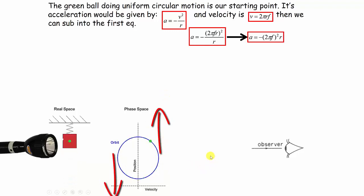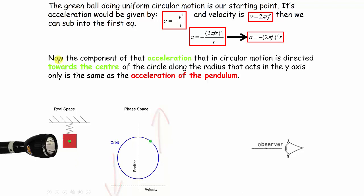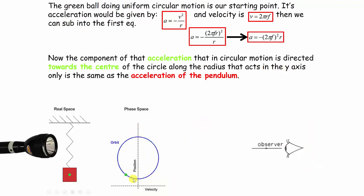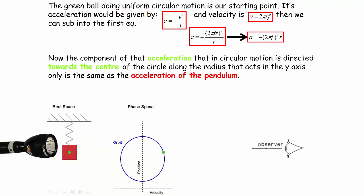That's circular motion. Now if we consider the green ball still going in a circle, the component of the acceleration that in circular motion is directed towards the center of the circle along the radius that acts in the y axis is the same as the acceleration of the pendulum.